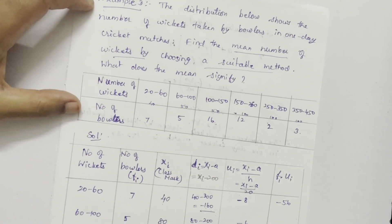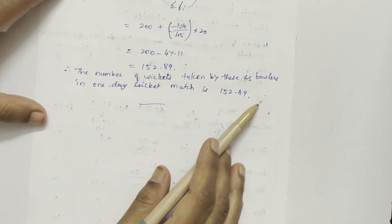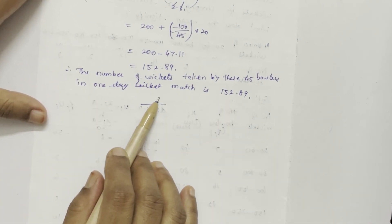In our question, what does the mean signify? The mean signifies the number of wickets taken by 45 bowlers in one day cricket match.